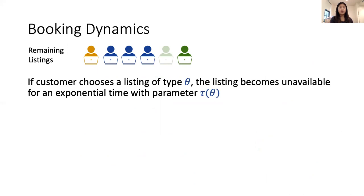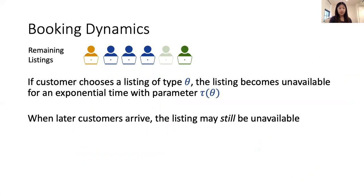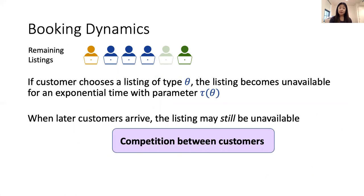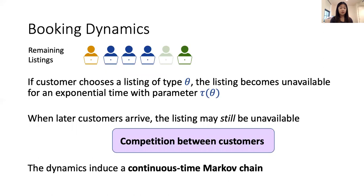Once a listing is booked, it becomes unavailable for some exponential time, which can depend on listing type. When later customers arrive, this listing might still be unavailable, meaning there's competition between customers. This is the competition that showed up in our earlier online labor platform example — the competition that actually caused the bias in the overall estimate. All these dynamics induce a continuous time Markov chain that we can then use to study experiments on these platforms.